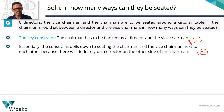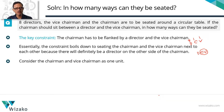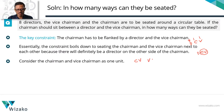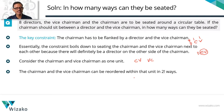To ensure the chairman and vice-chairman sit next to each other, we treat them as a single unit. We are not dividing them into two individuals but looking at them as one single unit. This unit can be arranged in two ways: chairman to the left and vice-chairman to the right, or vice-chairman to the left and chairman to the right.